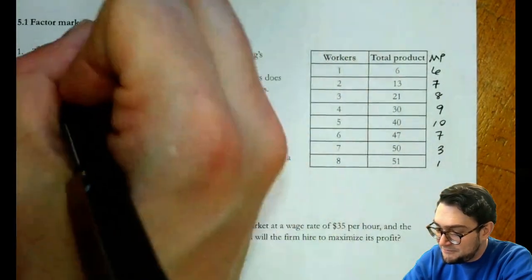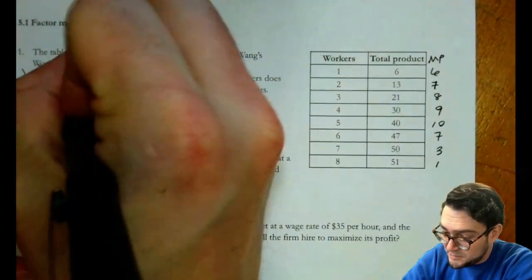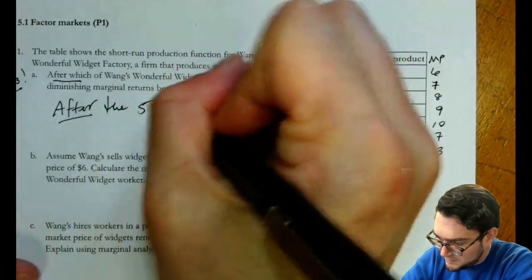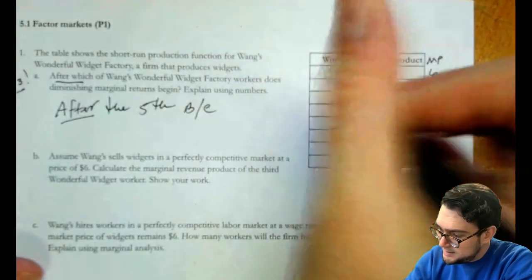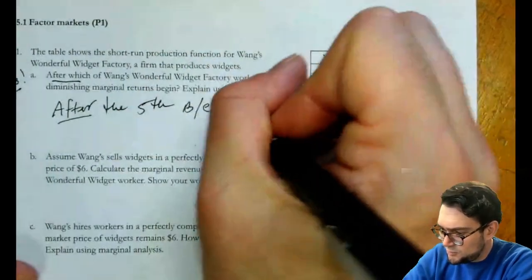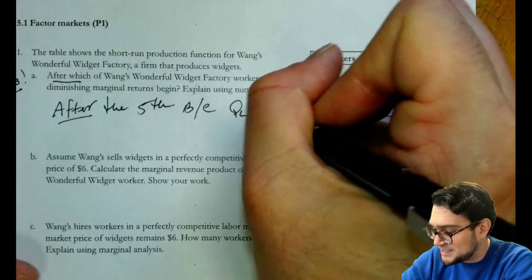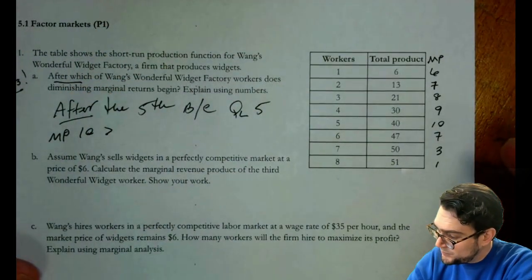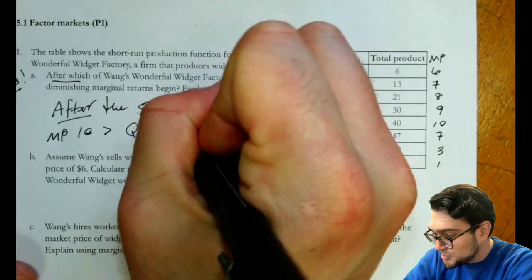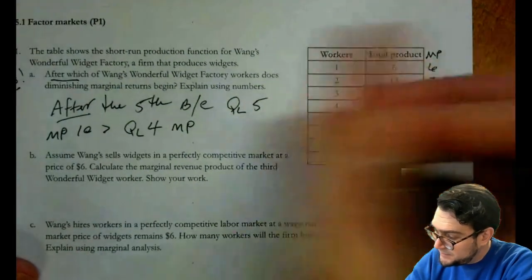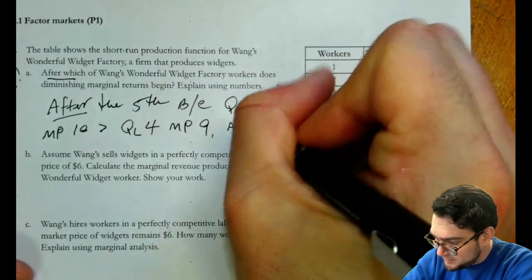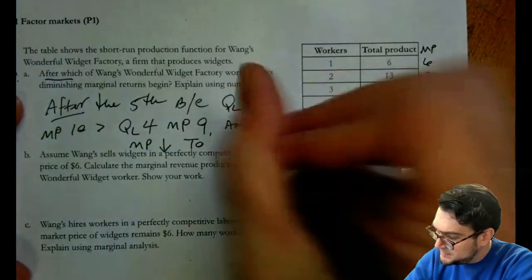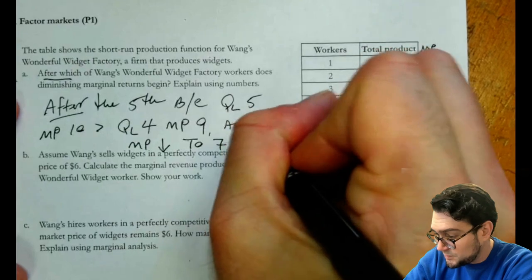So it begins, which one does it say? After which, after which. So it is after the fifth, because let's see, quantity of labor. I had to think about it for a second. Quantity of labor five, marginal product of 10 is bigger than quantity of labor four, marginal product of nine. And quantity of labor six, marginal product decreases to seven units or seven widgets, technically.